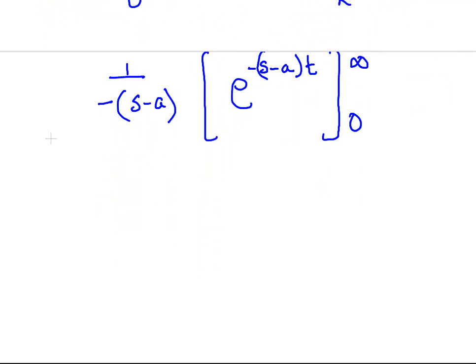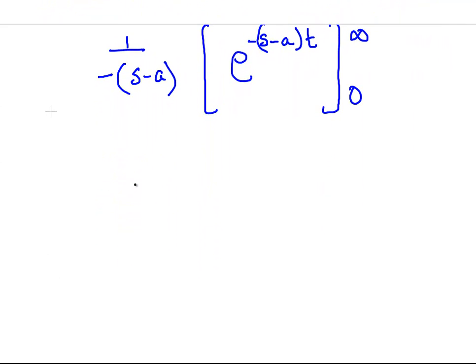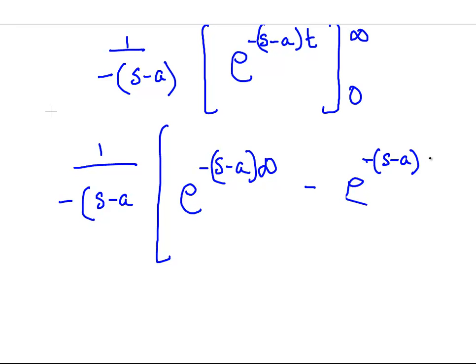We have to evaluate both of those at infinity and 0. So 1/(-(s-a)). Let's evaluate it at infinity. We have e^(-(s-a)∞) minus e^(-(s-a)·0). Well, that one goes to 1, pretty clearly. Anything with the power of 0 is 1.